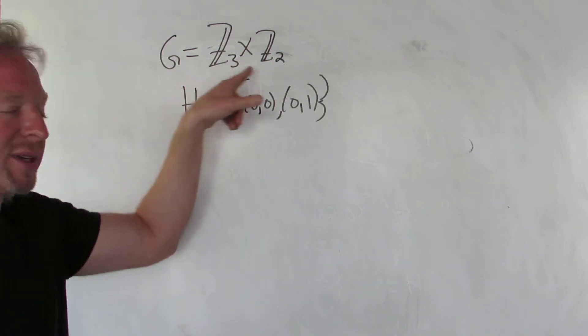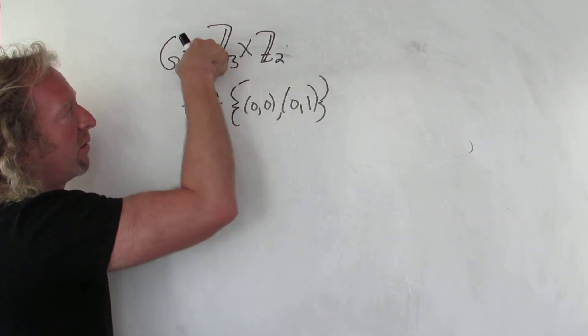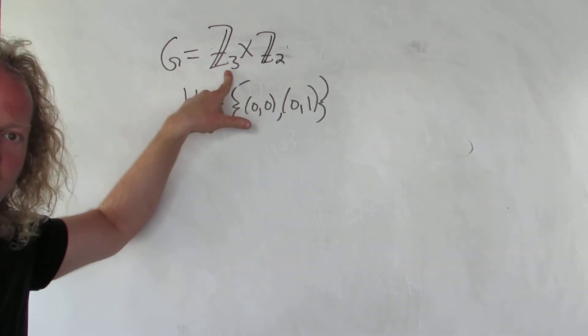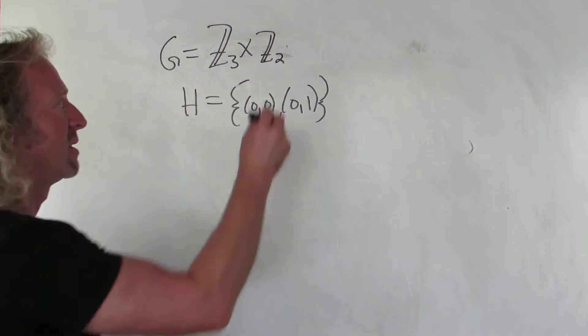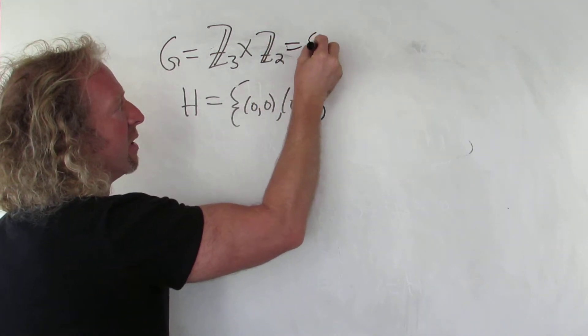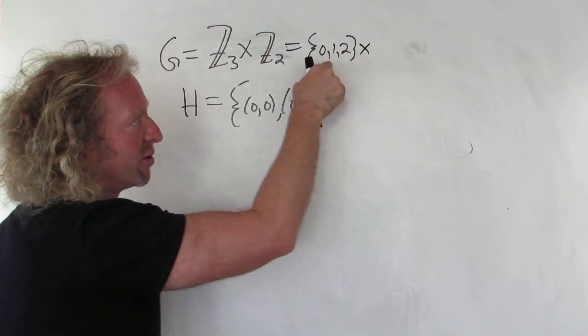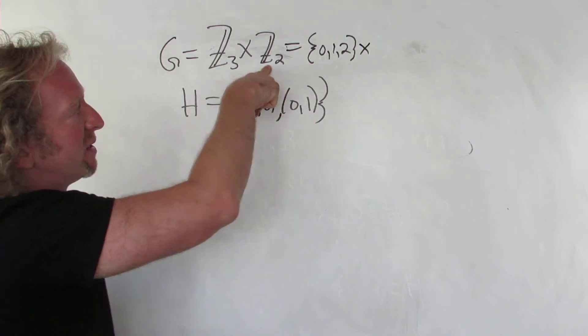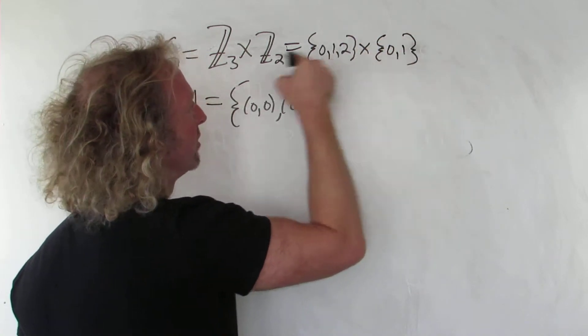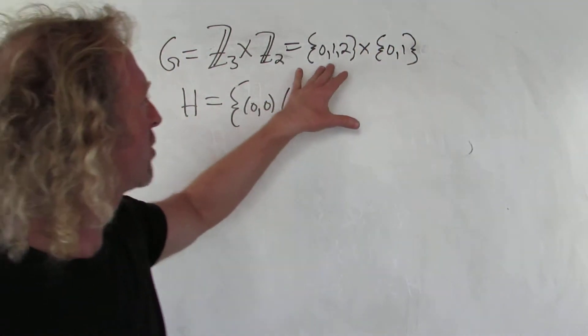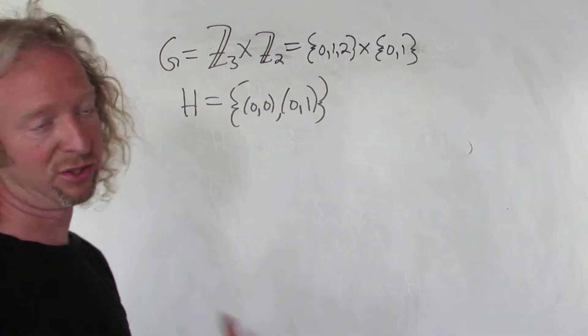So before we do that, let's write down all of the elements in G. Remember, this is all the remainders that you get when you divide a number by 3. This is all the remainders when you divide a number by 1. So this is actually a direct product of 0, 1, 2, the additive group of integers modulo 3, and 0, 1, the additive group of integers modulo 2.